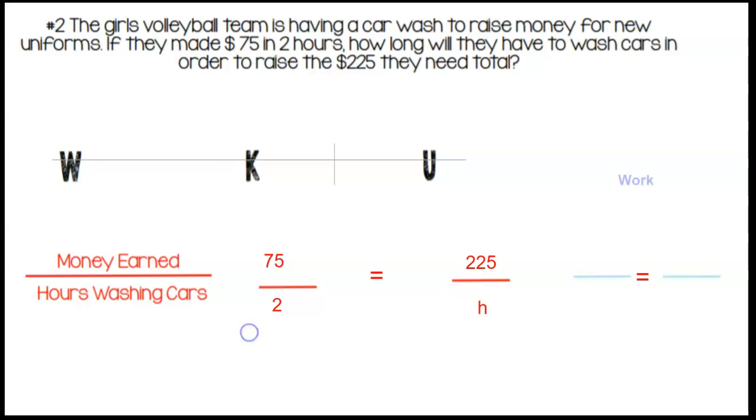Now let's solve. We would have seventy-five over two is equal to two hundred twenty-five over H. I see a relationship between seventy-five and two hundred twenty-five. I know that I can multiply times three in order to get two hundred twenty-five. Therefore, two times three is going to give me six. So H is equal to six hours.